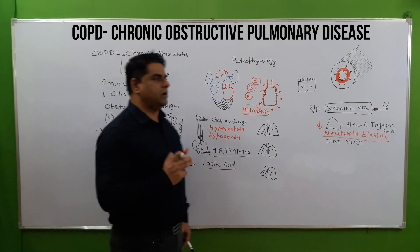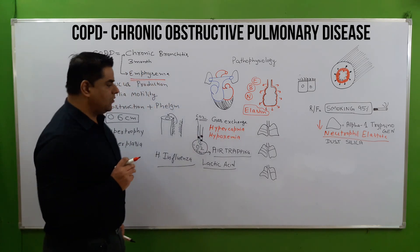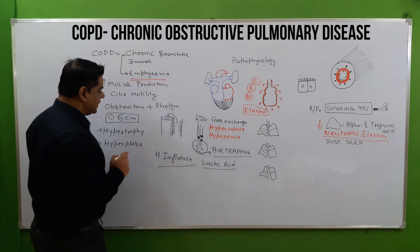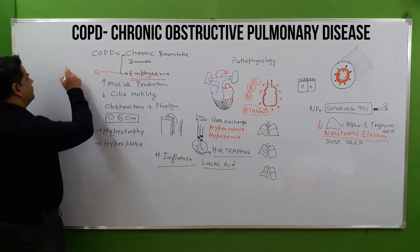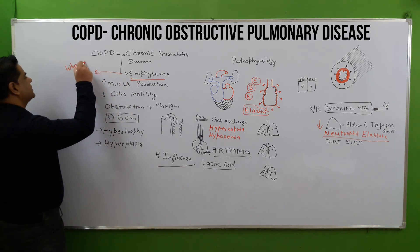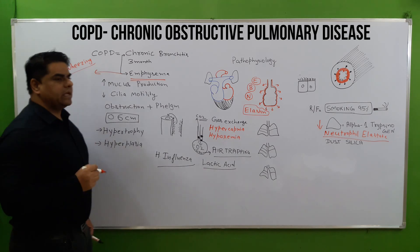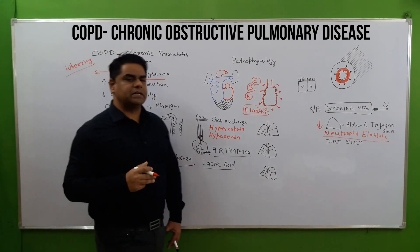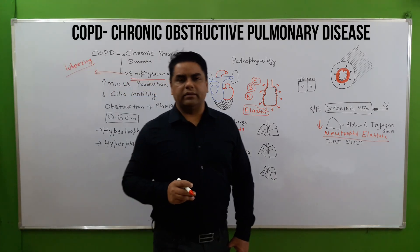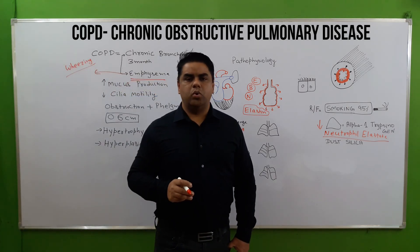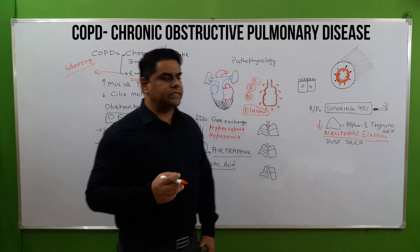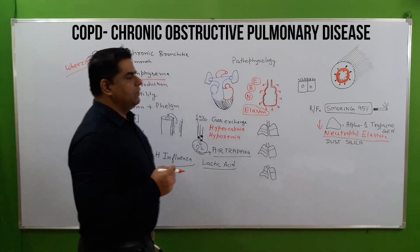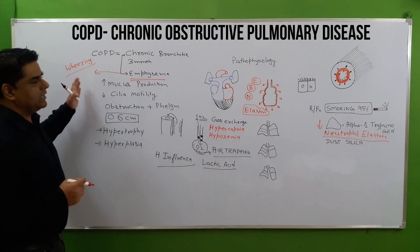Elasticity is lost and inflammation occurs. There is a wheezing sound in emphysema. The patient makes purse-like open lips and breathes with a wheezing sound. Loss of elastin is present.